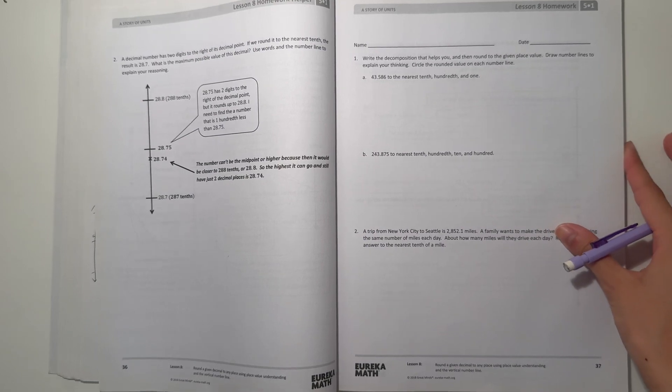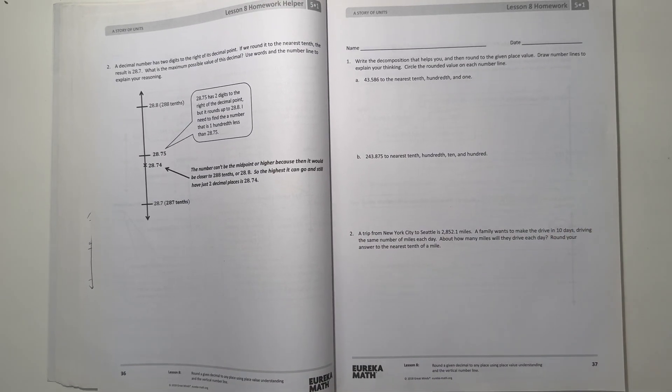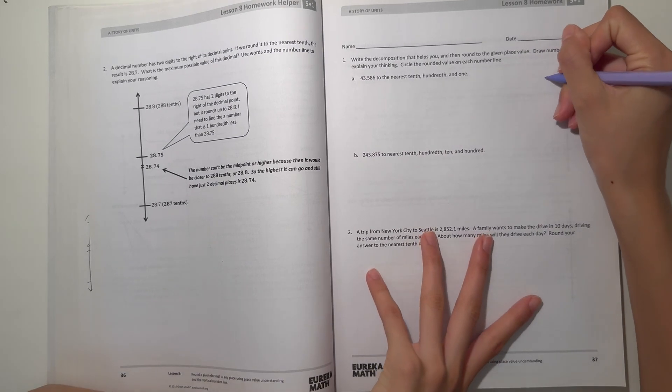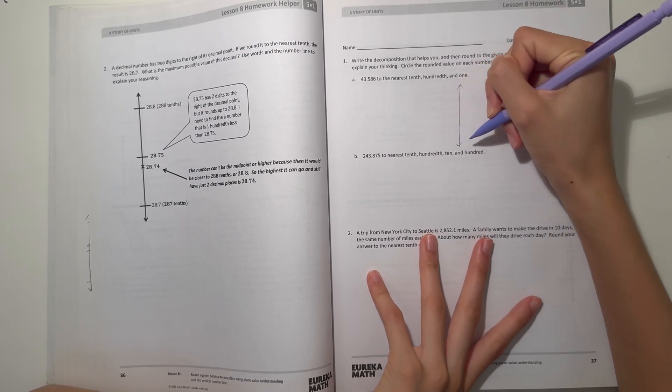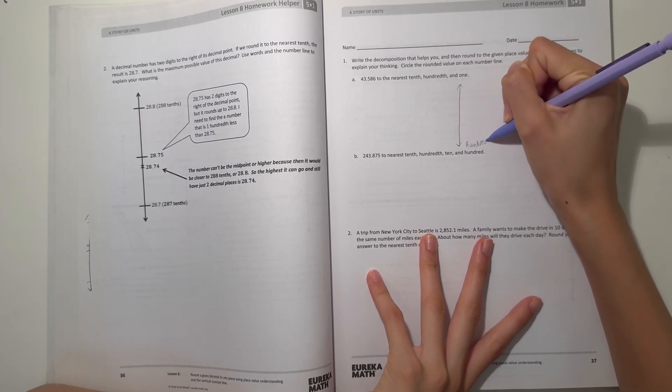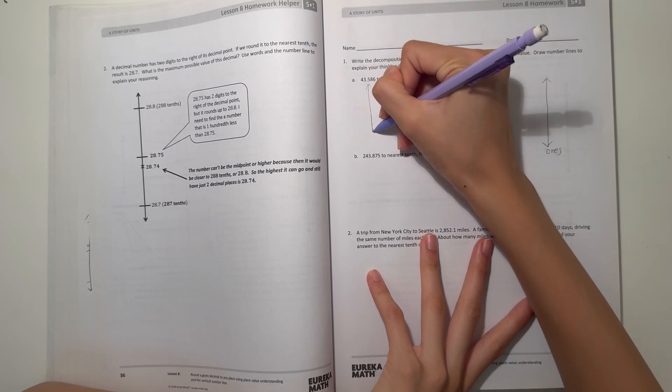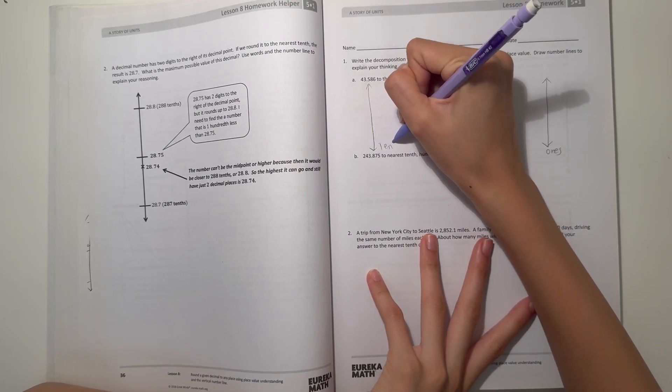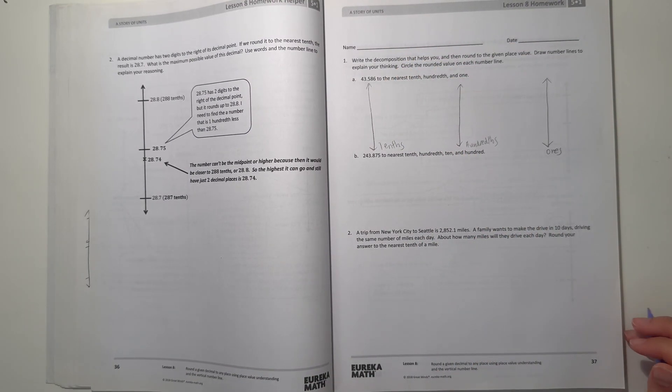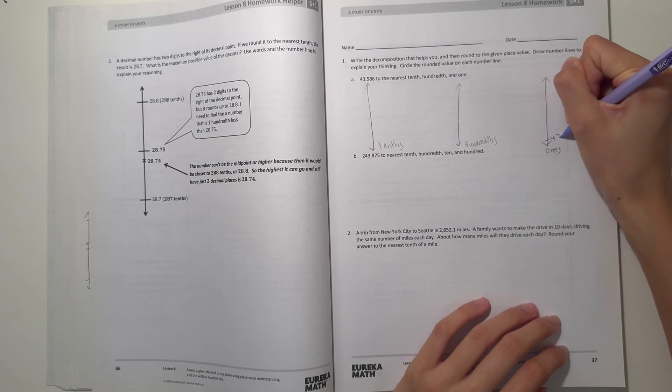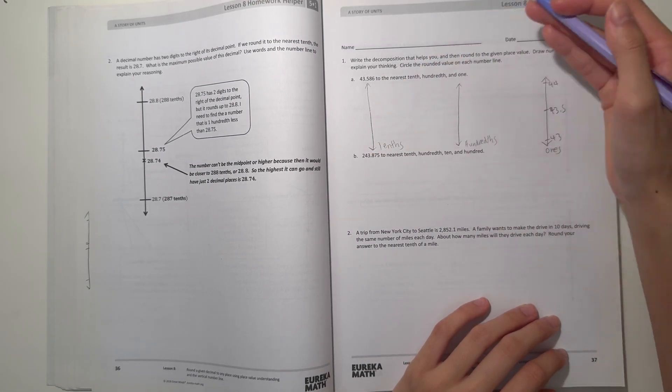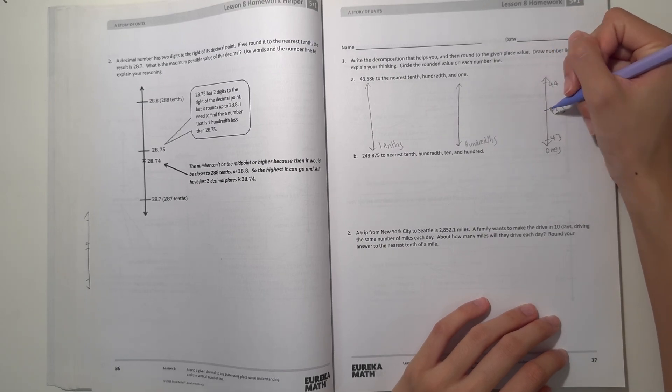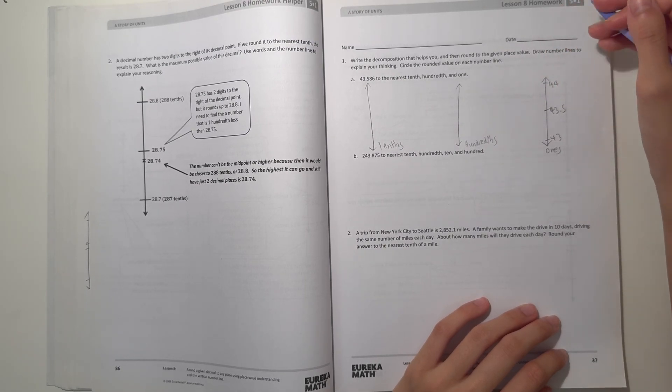Alright, so here we have 43.586 rounded to the nearest tenth, a hundredth, and one. Let's write the one over here. And here we can do our hundredth, and then here we can do our tenth. So 43.586 is in between 43 and 44. And our midpoint would be 43.5. So let's look at 43.586. So that would be exactly here. So then this number would round up to 44.